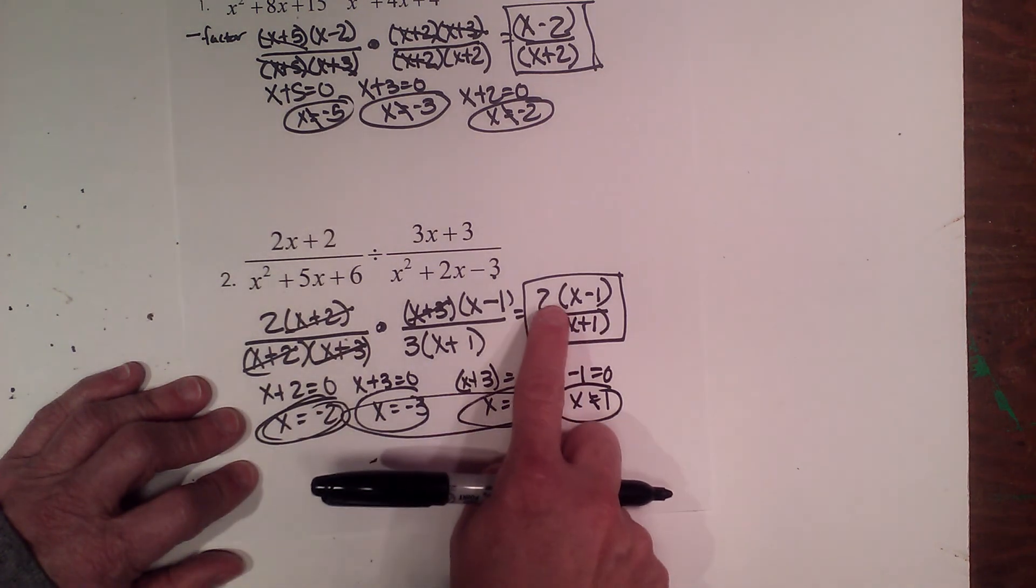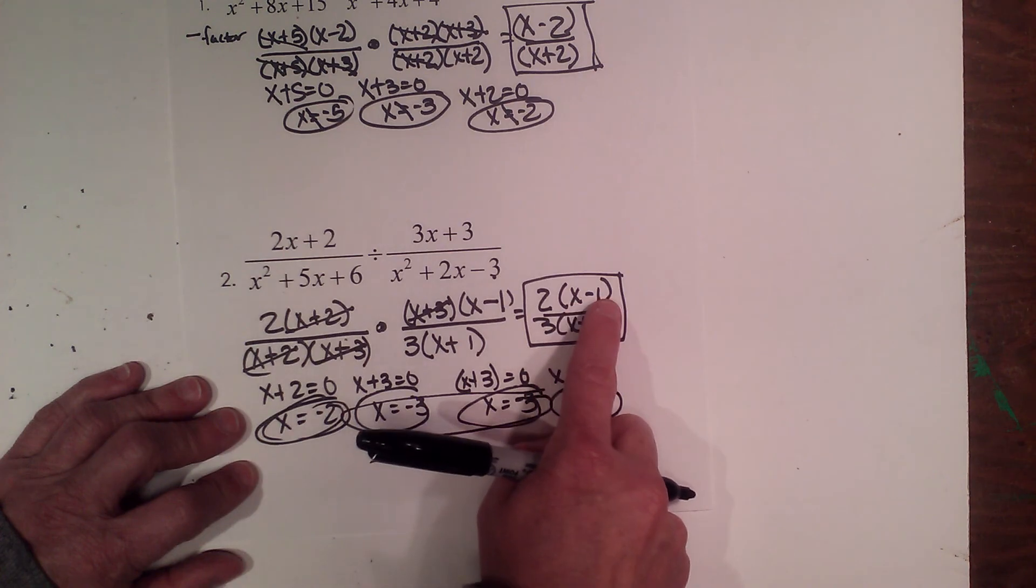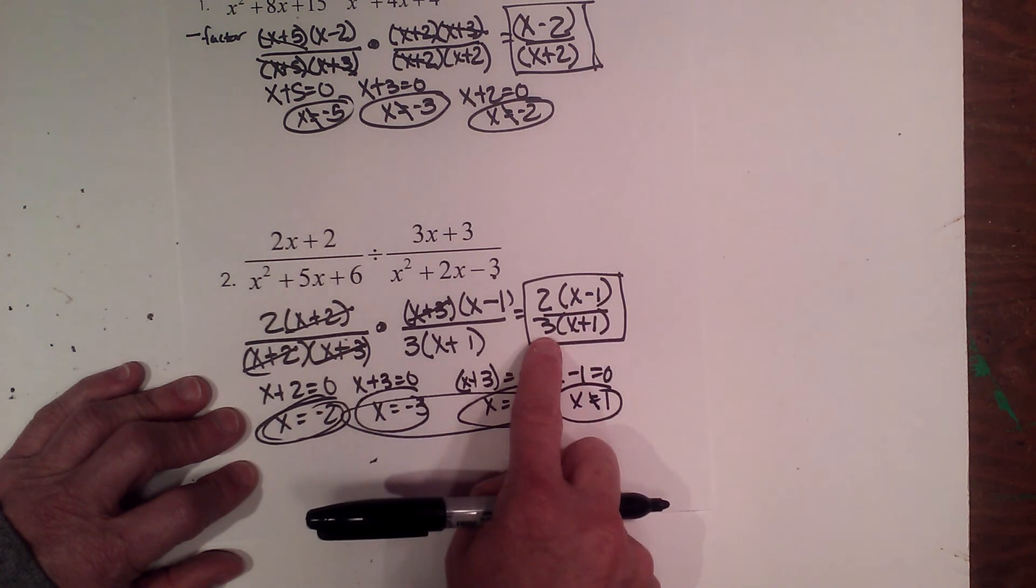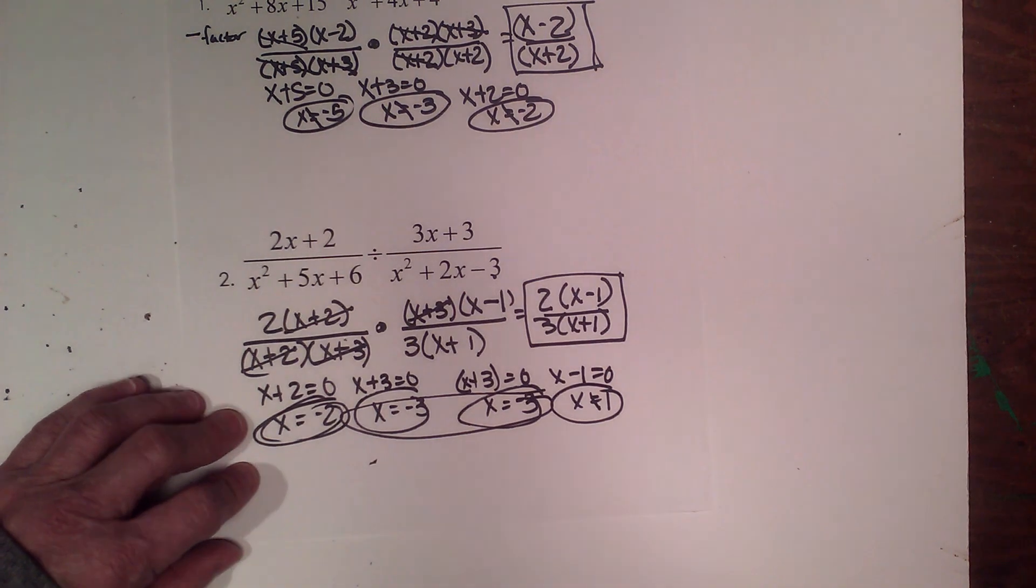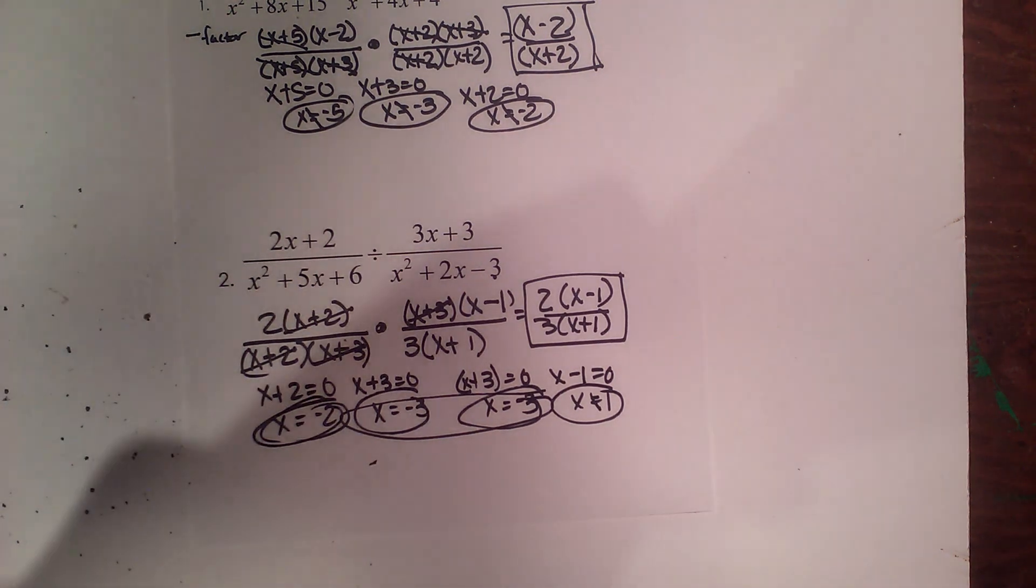And my final solution is 2 times x minus 1 all over 3 times x plus 1. So I hope this video was helpful on simplifying rational expressions.